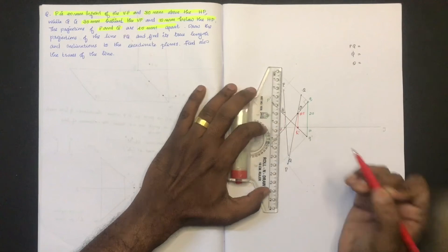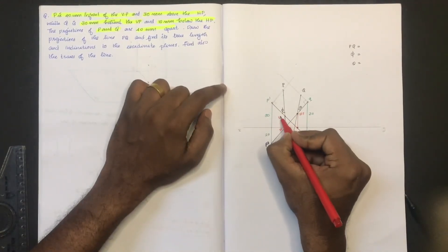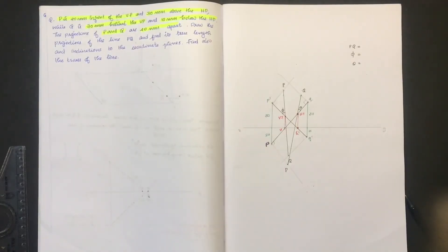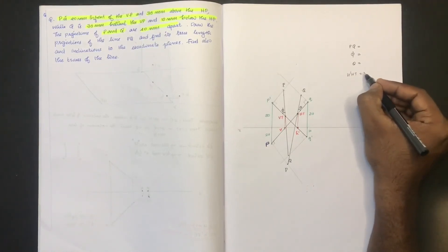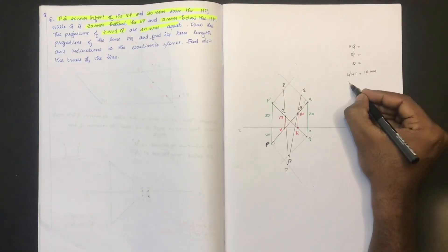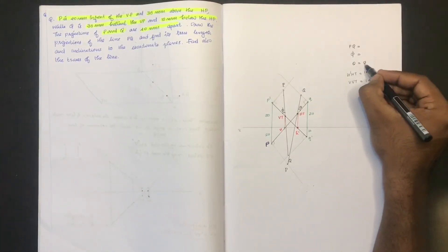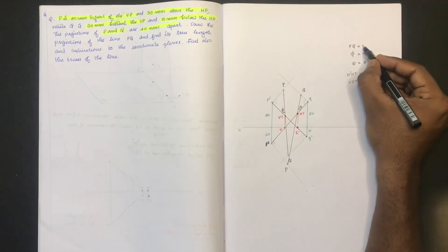If you want to add a vertical value, PQ gives V. VT is 5. Now the answer is: PQ true length is 1.8cm (18mm). VT is 14. Theta is 32 degrees. Other values: 5, 42, 2, 76, and 76 — 1.0mm. All dimensions are in millimetres.